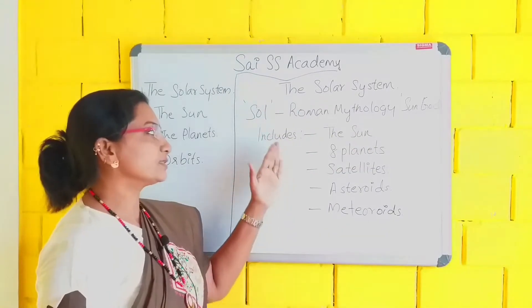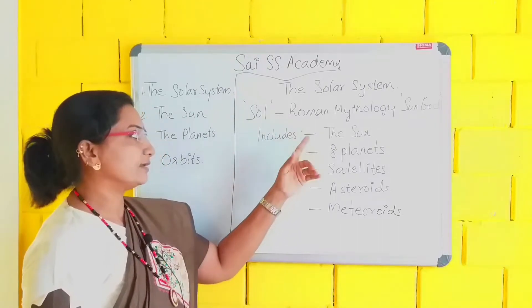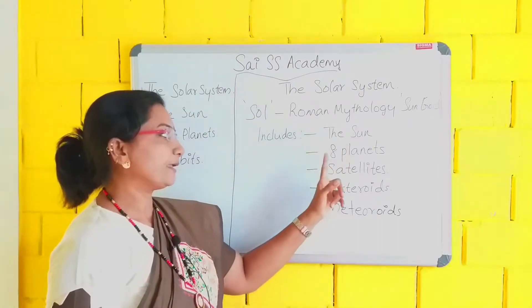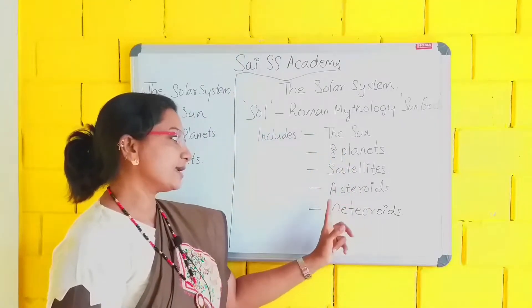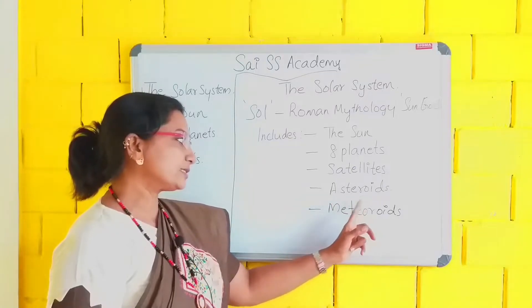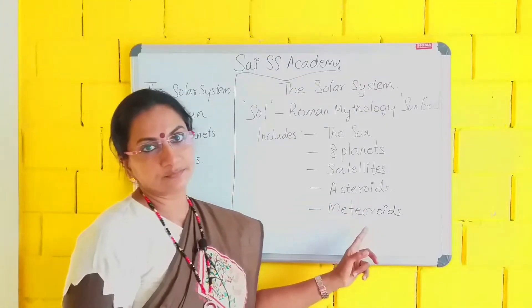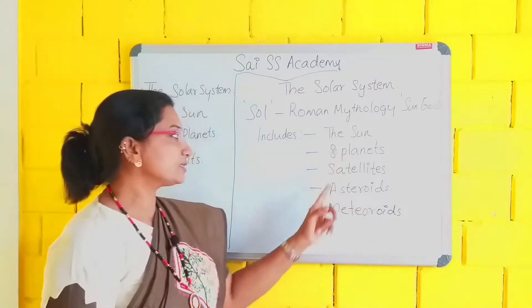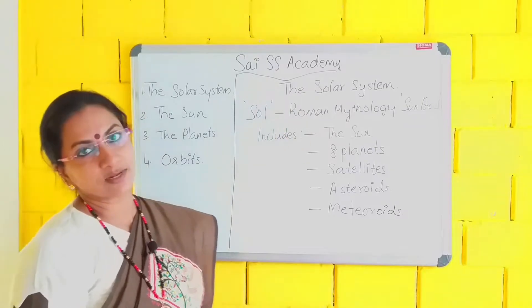What are the things in the solar system? We can see that the sun, 8 planets, satellites, asteroids, and meteoroids — all these things come in the solar system.